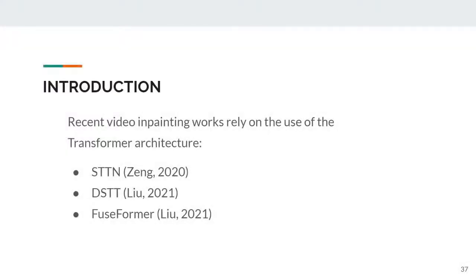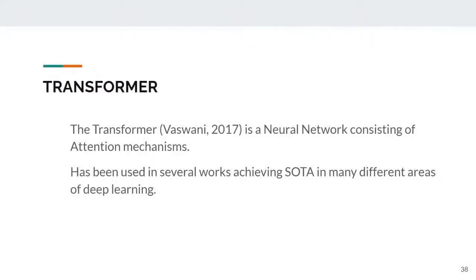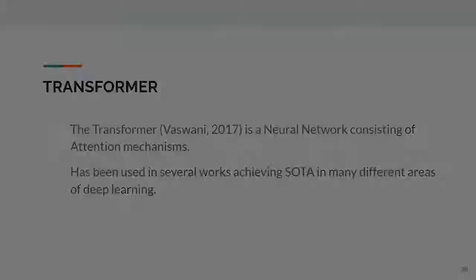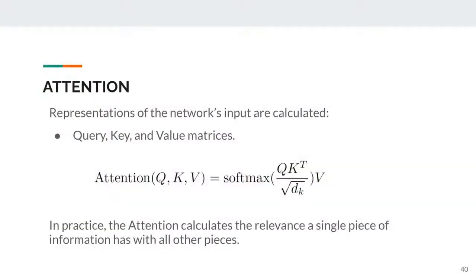The inpainting process applied to videos is currently a big challenge because additional information must be extracted from neighboring frames, elevating significantly the computational cost. Recent video inpainting works rely on the transformer architecture. Despite achieving state-of-the-art results, we could only find three works in the literature: the STTN, the DSTT, and the Fuseformer. The transformer is a neural network consisting of attention mechanisms, used in several works achieving state-of-the-art across many areas of deep learning.